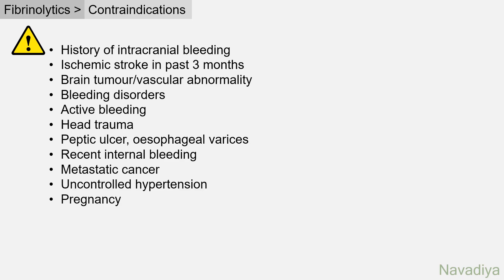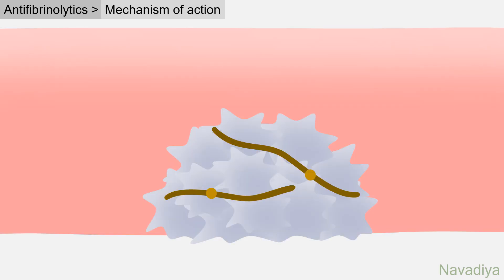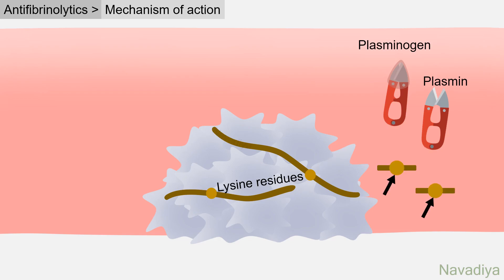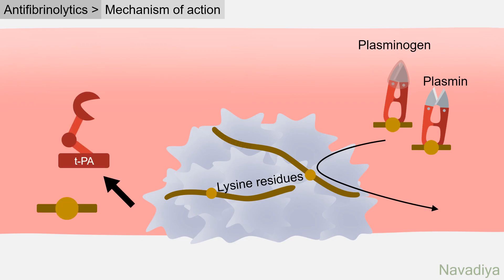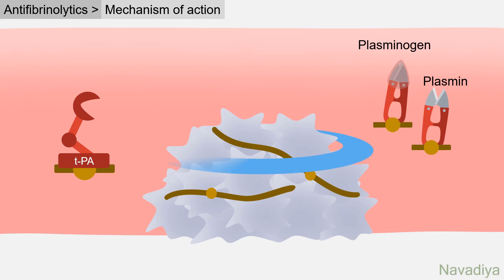Now let's see the drugs with the opposite function: antifibrinolytics, or inhibitors of fibrinolysis. These include epsilon-aminocaproic acid and tranexamic acid. They are lysine analogues. Plasminogen and plasmin have lysine binding sites through which they associate with lysine residues on fibrin. These drugs occupy the lysine binding site, so plasmin and plasminogen cannot bind with fibrin. They also bind the lysine binding site on tissue plasminogen activator, so tPA cannot bind fibrin either. Thus antifibrinolytics keep all these destructive molecules away from the clot, keeping it intact.